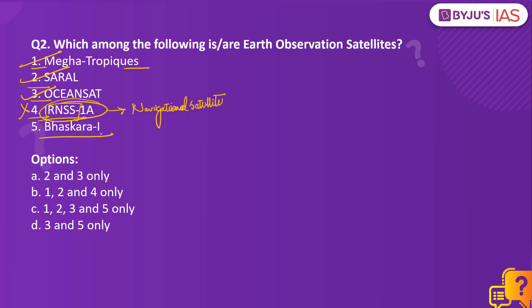Coming to Bhaskara-1, this was India's first low-orbit Earth Observation Satellite and it collected data on telemetry, oceanography and hydrology, so this is also an Earth Observation Satellite. Therefore the right answer to our question would be option C — 1, 2, 3 and 5 only.